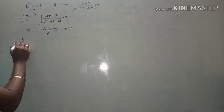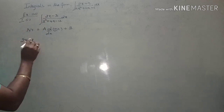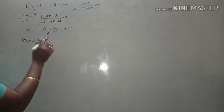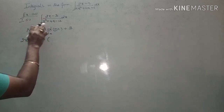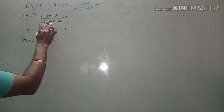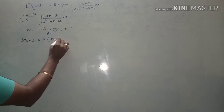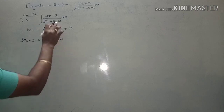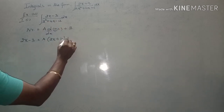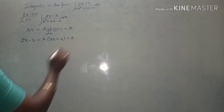Here the numerator is 2x minus 3. A times differentiating the denominator: derivative of x² is 2x, derivative of 4x is 4, and minus 12 is a constant so its derivative is 0. So we get A times (2x + 4) plus B.